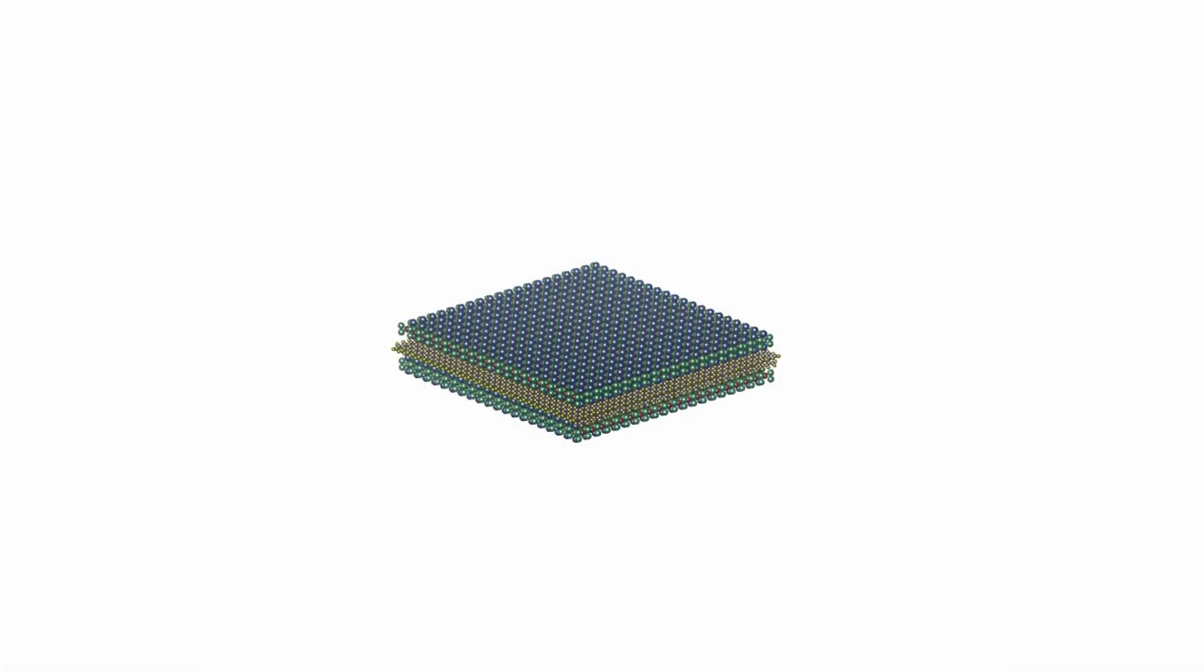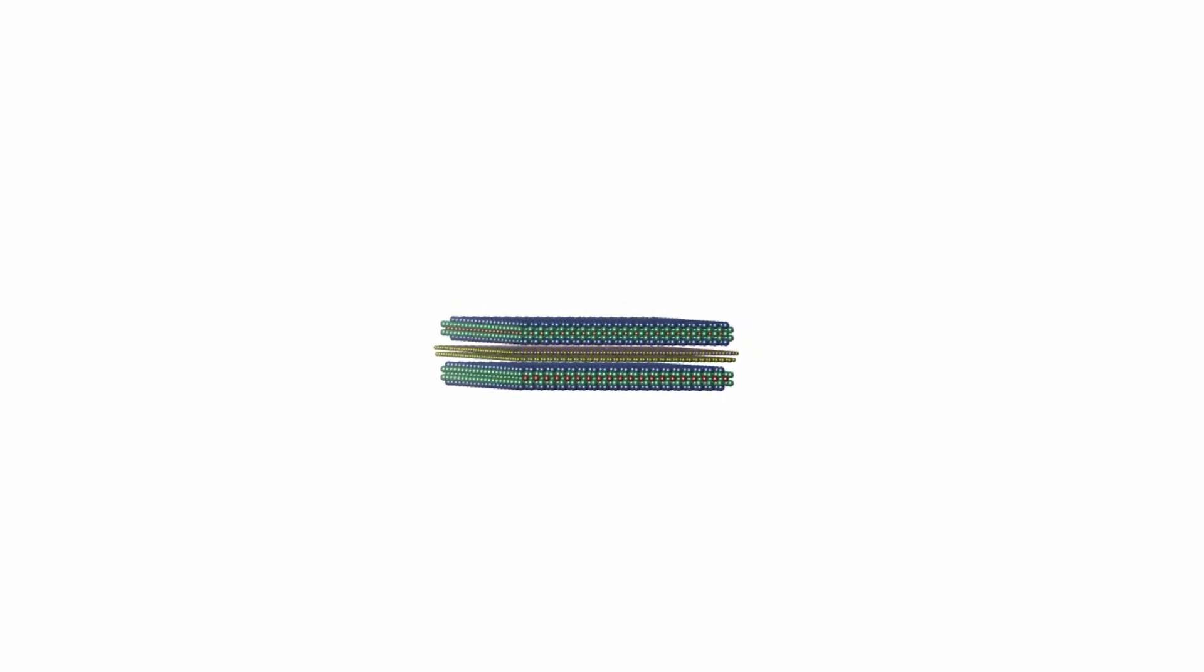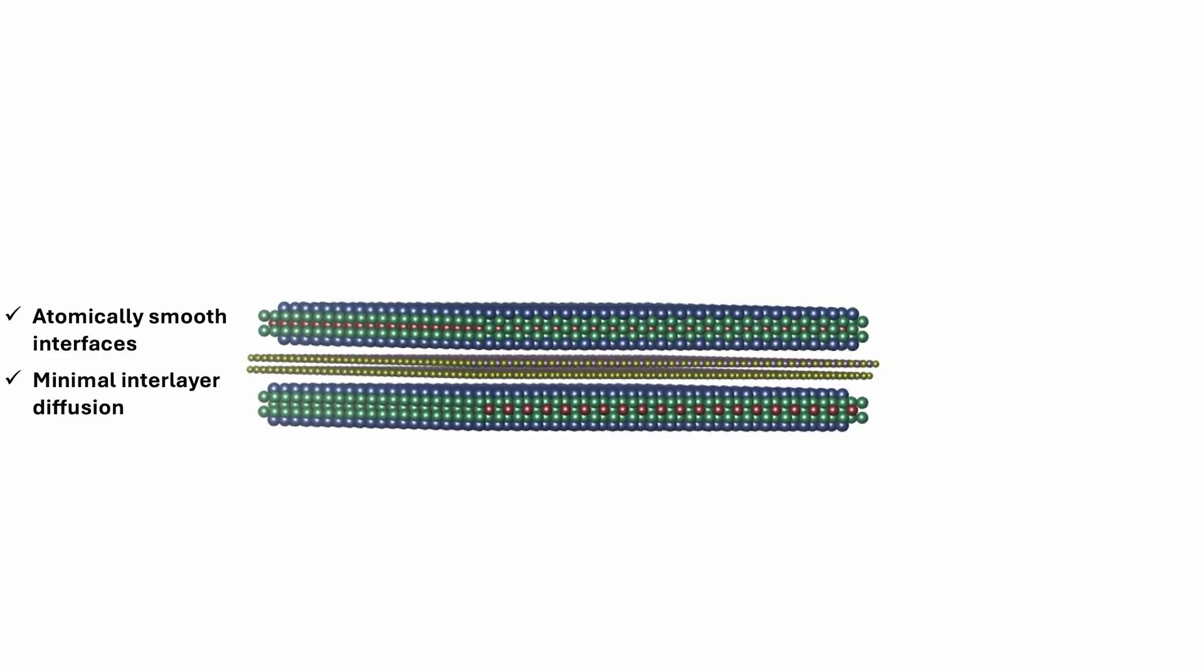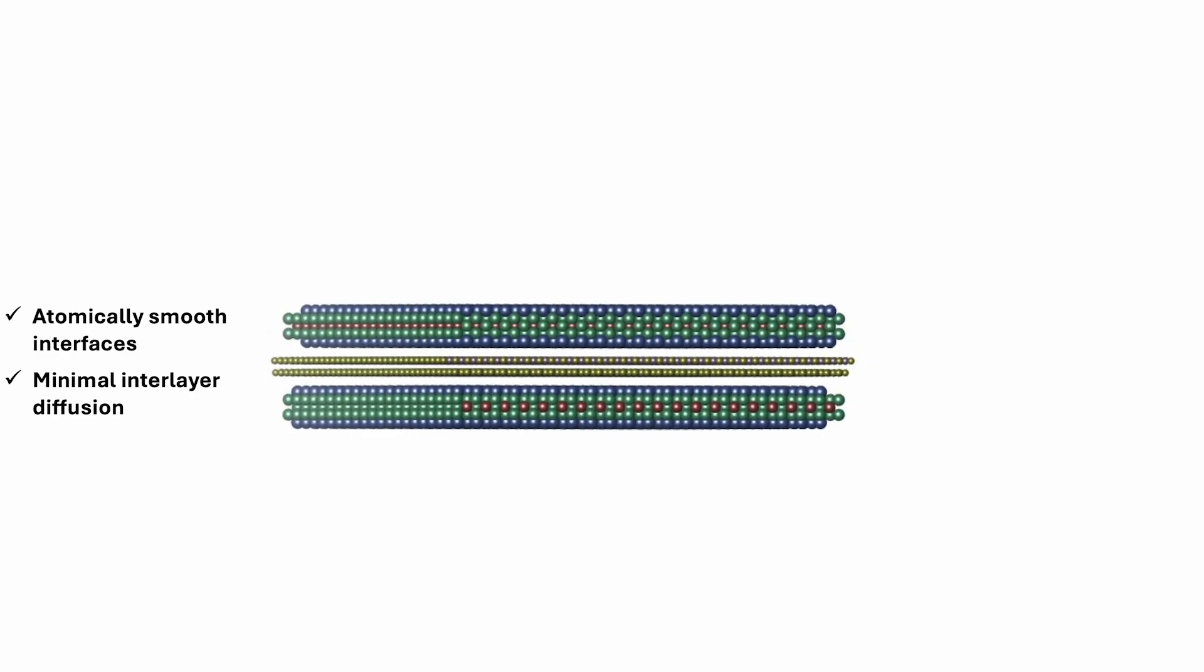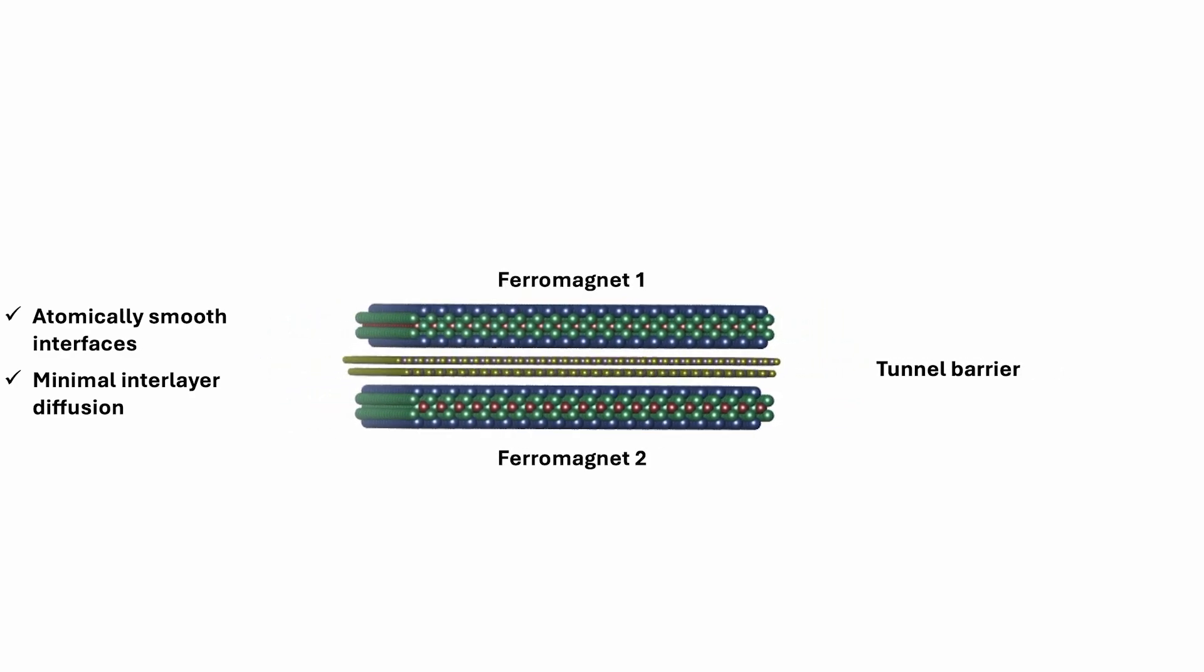A solution to this issue is to use two-dimensional Van der Waals magnetic materials to build the MTJs. By their nature, Van der Waals materials maintain atomically smooth interfaces and sharp boundaries even when shrunk to single layer thickness, offering an ideal path to creating scalable, energy-efficient spintronic devices.